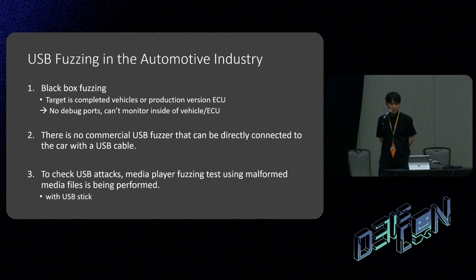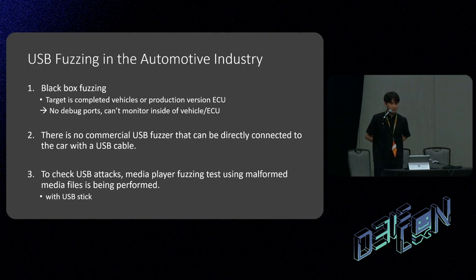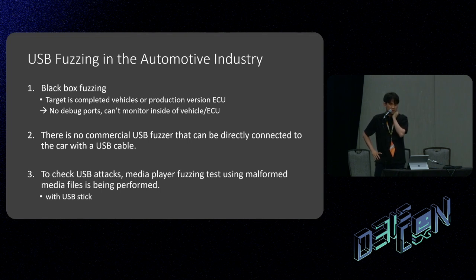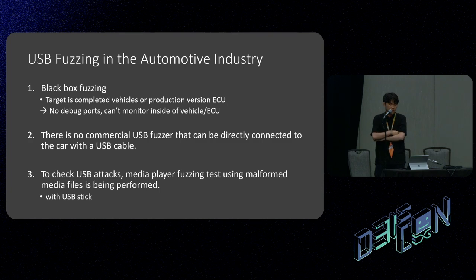Let's talk about the current USB fuzzing in the automotive industry. There are three characteristics in USB fuzzing on real cars. First, it's black box fuzzing. OEMs usually don't have source code of the car because tier suppliers don't provide it. So we also don't have source code and cannot rebuild it for fuzzing. Most cases, our target is a completed vehicle with a production firmware image, meaning there are no debugger ports, so we cannot monitor inside the car.